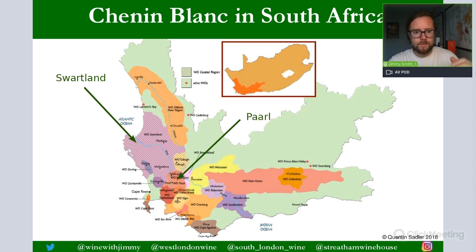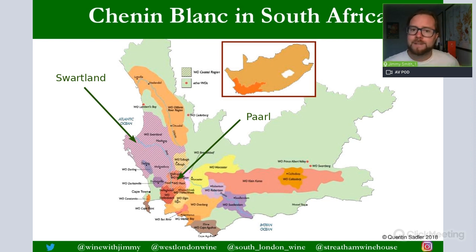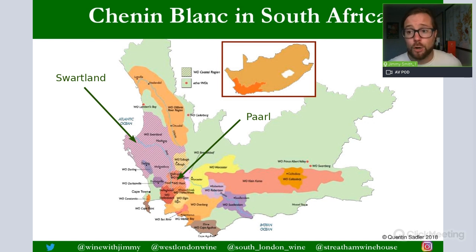Then we have Paarl, which is quite a historical area — home of the KWV, the wine cooperative that ran the entire wine and spirits industry of South Africa for about 70 years in the 20th century. It has Wellington towards its northern tip and places like Franschhoek, a wonderful gastronomical destination. Paarl generally makes Chenin Blancs that tend to be bigger, more robust, with higher alcohols — it's quite a warm location. The first Chenin Blancs made after the end of apartheid in the 1990s were emulating Chardonnays from Napa and Australia — higher alcohol, richly oaked styles from Paarl and leading into Stellenbosch.